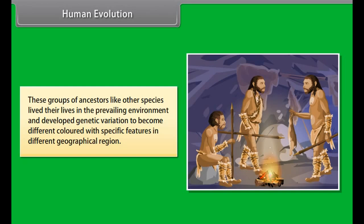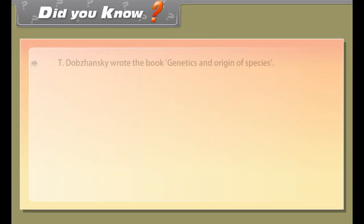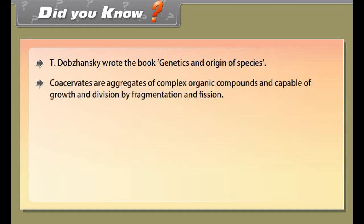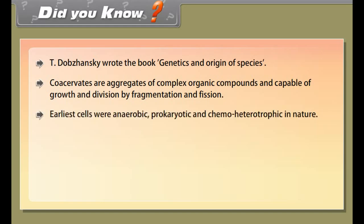In evolution, older species are not eliminated during the formation of new species, and most older and simpler species still survive. The evolved species are not always better than the parental species. Evolution depends upon natural selection and genetic drift, which together result in a population that is reproductively isolated from the parental species.